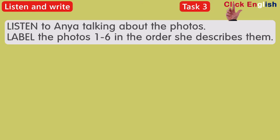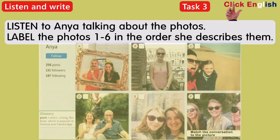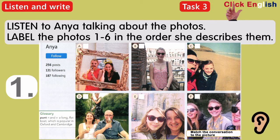Listen to Anya talking about the photos. Label the photos one to six in the order she describes them. This is me and my mum in York. It was my first term at university and she came to visit me and I took her on a tour around the city.